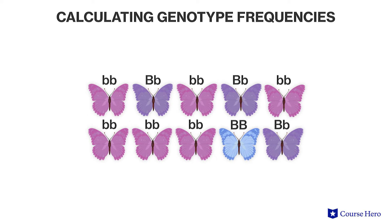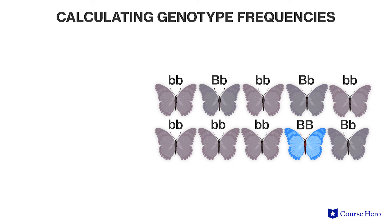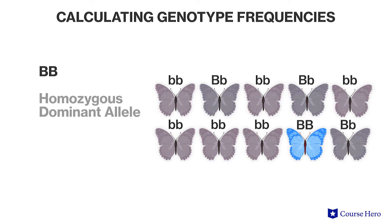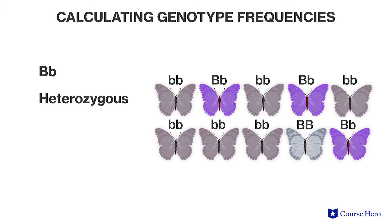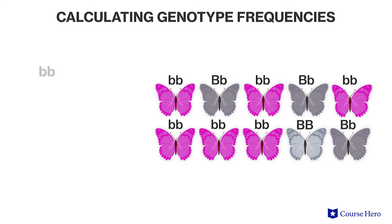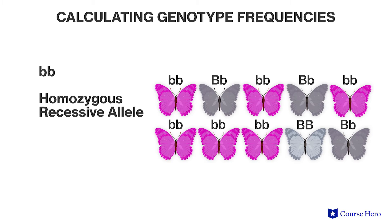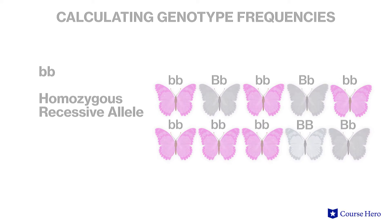Let's take a look at how you would go about calculating genotype and allele frequencies. In this population of butterflies, some butterflies are blue and have the genotype BB, or homozygous for the dominant allele. Some are purple with the genotype Bb, or heterozygous. And some are pink with the genotype bb, or homozygous for the recessive b allele. To calculate the genotype frequencies, we need to count the number of individuals with each genotype and divide by the total number of individuals.